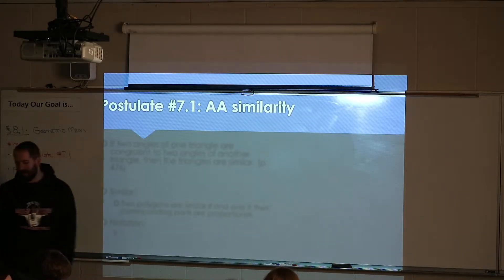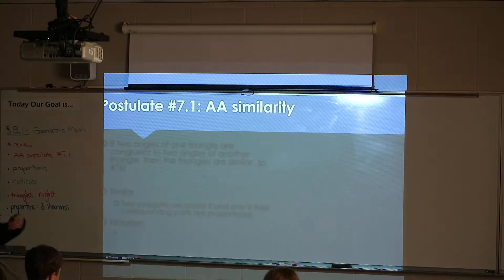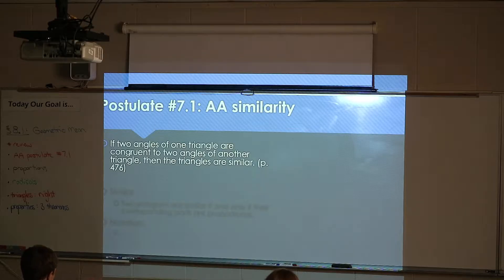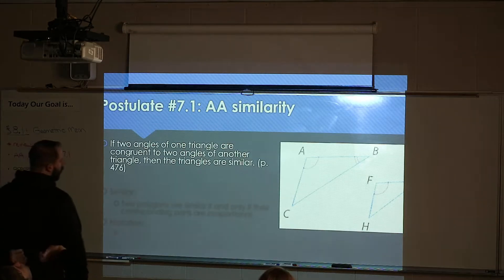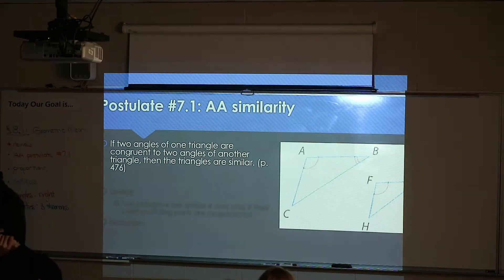Postulate 7.1 — it's called Angle-Angle Similarity. If two angles of one triangle are congruent to two angles of another triangle, then the triangles are similar. Not equal, but similar. So here's the picture we kind of used.